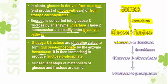Both glucose and fructose molecules undergo phosphorylation — an inorganic phosphate molecule is added from ATP. The conversion of glucose into glucose-6-phosphate requires energy in the form of ATP; the reaction is catalyzed by the enzyme hexokinase, and ATP is converted into ADP. This is an energy-consuming step.